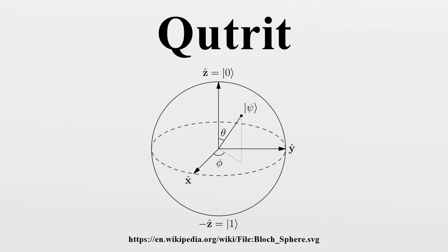A cutrit is a unit of quantum information that exists as a superposition of three orthogonal quantum states. The cutrit is analogous to the classical trite, just as the qubit, a quantum particle of two possible states, is analogous to the classical bit.